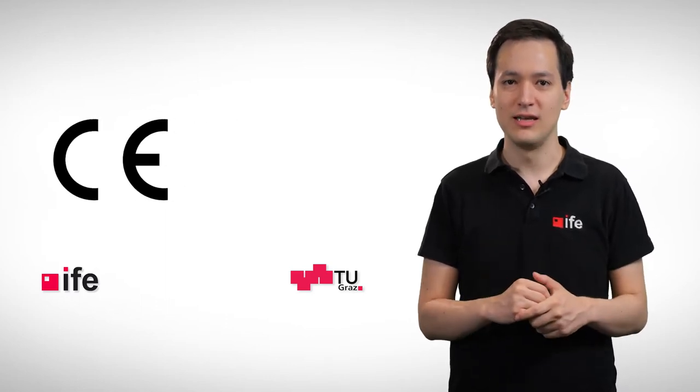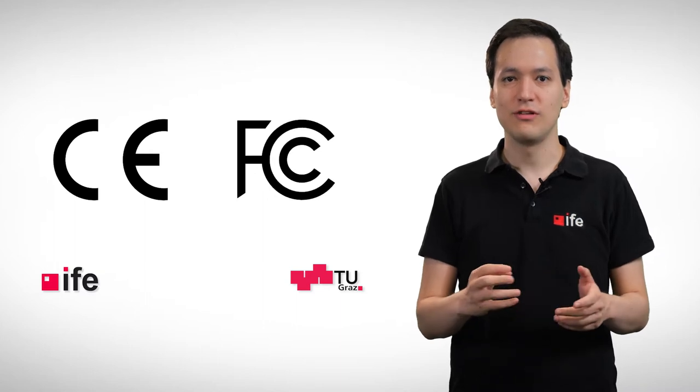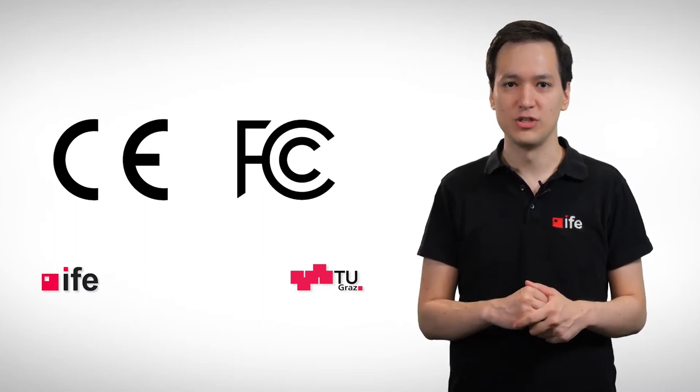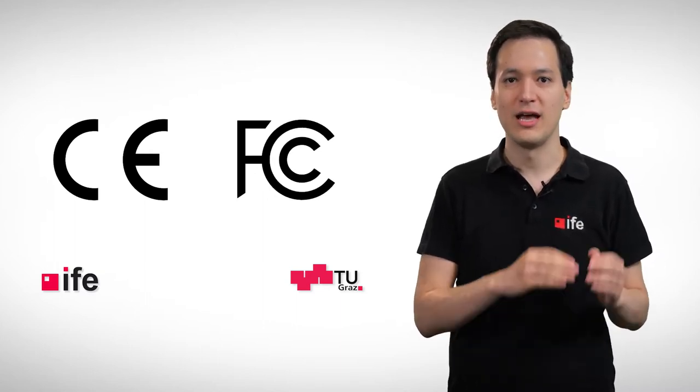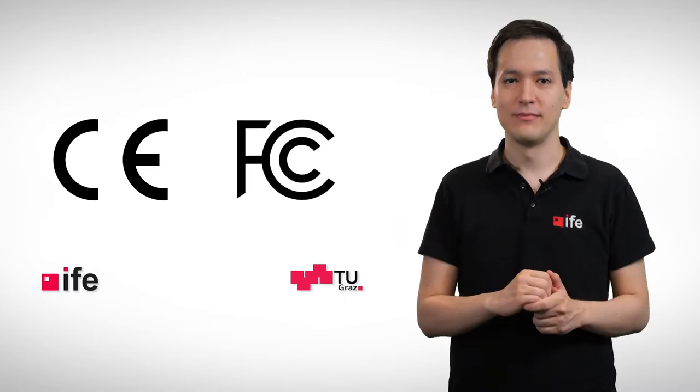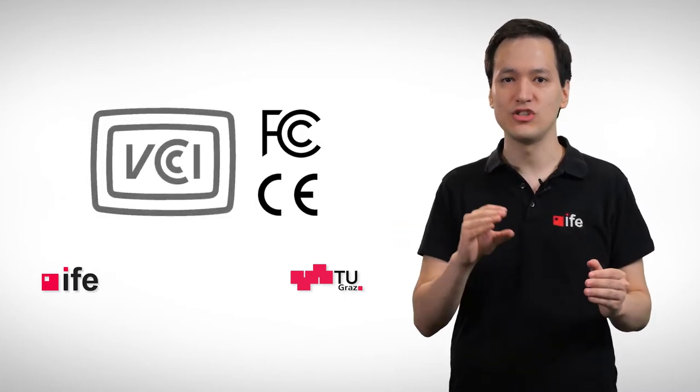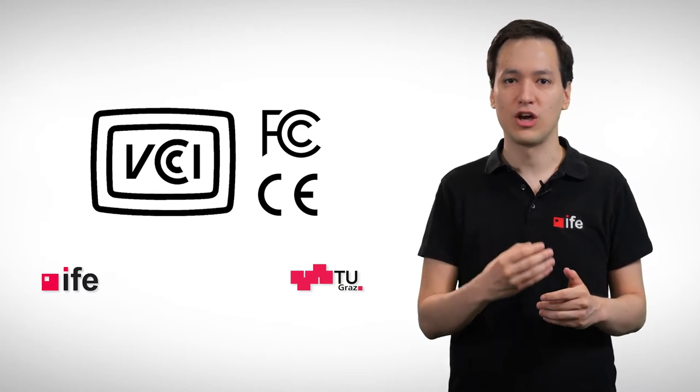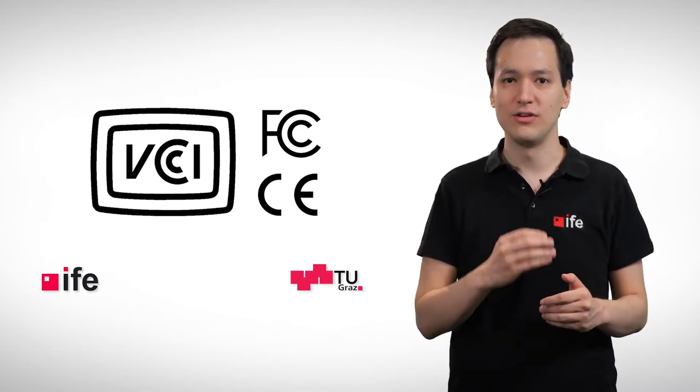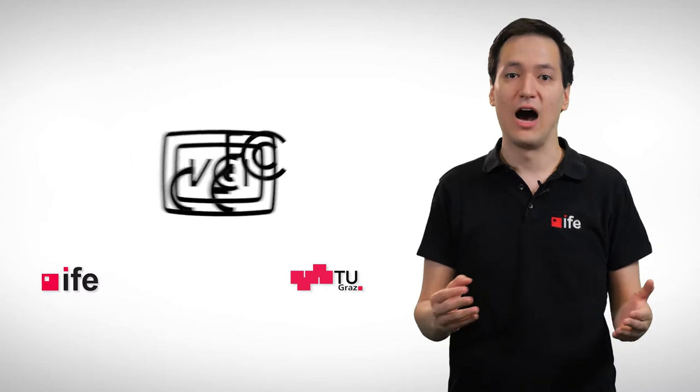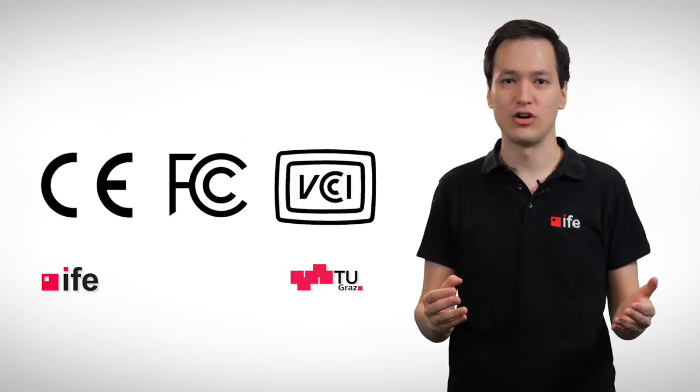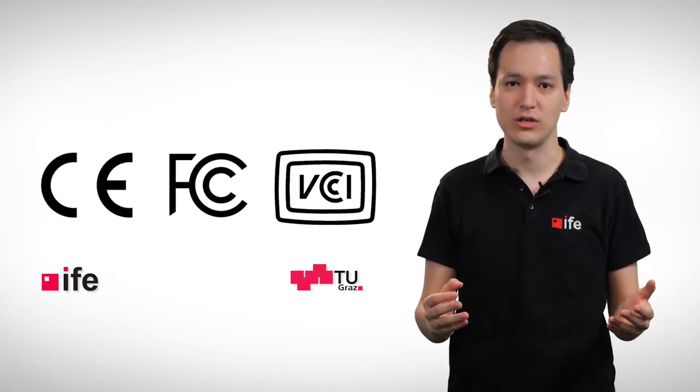If you want to sell your product in the States, you need to fulfill the Federal Communications Commission's requirements, short FCC. In Japan, you will find the VCCI certification from the Voluntary Control Council for interference. But how can we classify if an electronic system will disturb our surroundings or not?